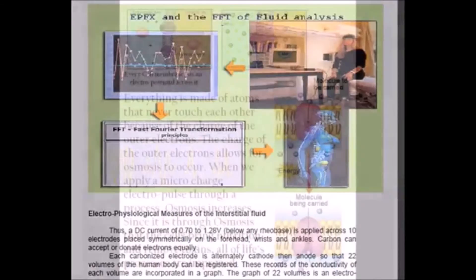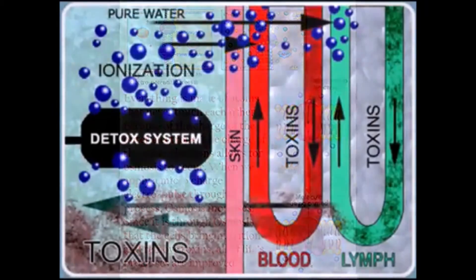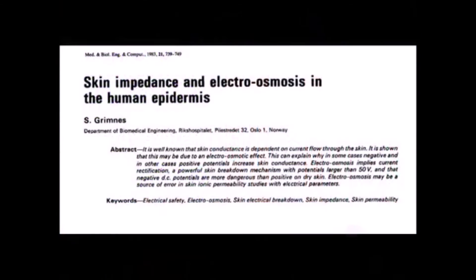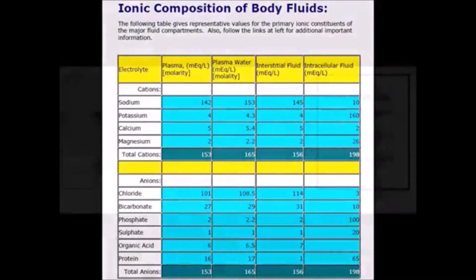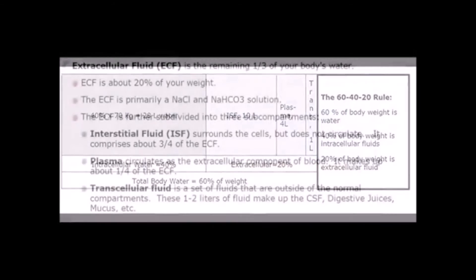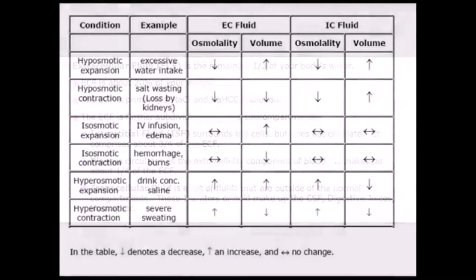We can measure these with the SCIO and then measure the electrophysiological factors of the interstitial fluid. This has to do with the osmosis factors and the electro potential of the membrane. So there is a body electric that can be measured, and we can see these factors and measure these factors with the SCIO.